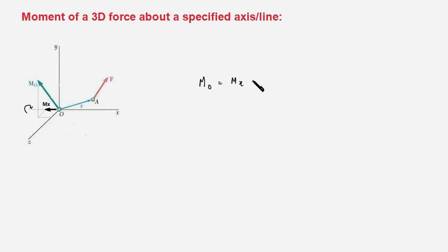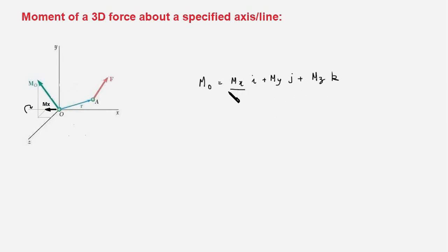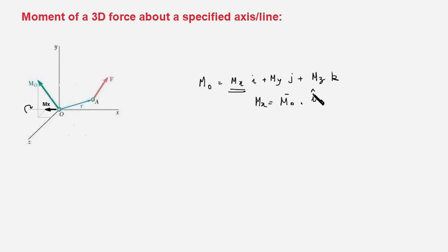The moment vector Mo can be written as Mx·i plus My·j plus Mz·k, where these are the component labels with numerical values. Mx is the moment about the x-axis, and this can also be found by taking the dot product of the vector Mo with a unit vector along the x-axis, because Mx is the projection of the moment vector Mo onto the x-axis.